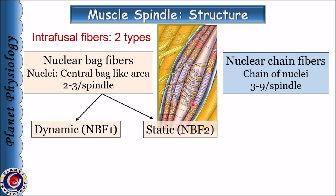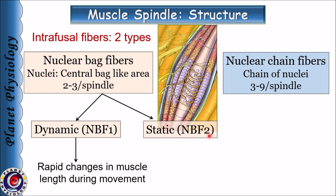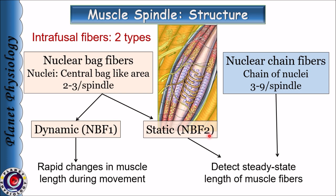Dynamic nuclear bag fibers are also known as nuclear bag fiber one, whereas static fibers are also known as nuclear bag fiber two. Dynamic nuclear bag fibers are concerned with detection of rapid changes in the muscle length during movement, whereas static nuclear bag fibers along with the nuclear chain fibers are concerned with detection of steady state length in the muscle fiber.